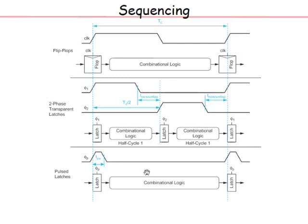A pulse latch is transparent only for the short duration of the pulse. If you miss your deadline by a little, you still have some opportunity because the latch window is still open — that is the soft edge and the basis of time borrowing. But you cannot borrow from the stage after next because the borrowing window is very short. On average, the throughput is still one clock cycle per stage.